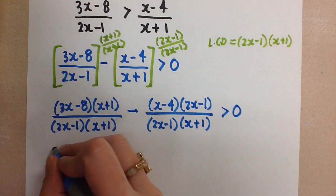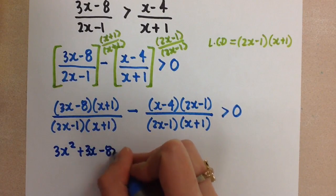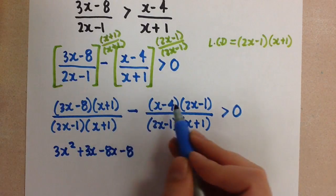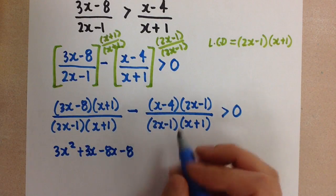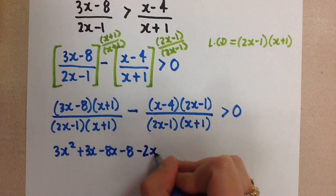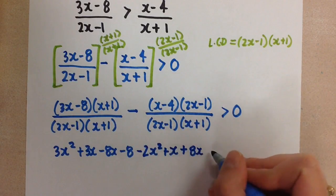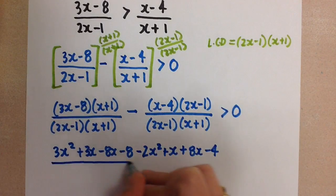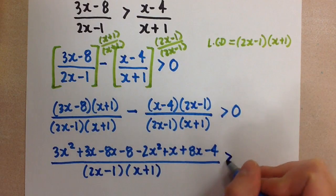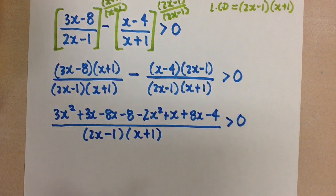So let's see what that looks like when we multiply it out. In the numerator here I'll have (3x − 8)(x + 1) over (2x − 1)(x + 1), then minus (x − 4)(2x − 1) over (2x − 1)(x + 1). Now the denominators are the same so I can put them together and subtract the numerators. Distributing the first pair gives 3x² + 3x − 8x − 8. Then I distribute the second pair, keeping in mind the negative sign — so x times 2x is 2x², but with the minus gives us −2x².